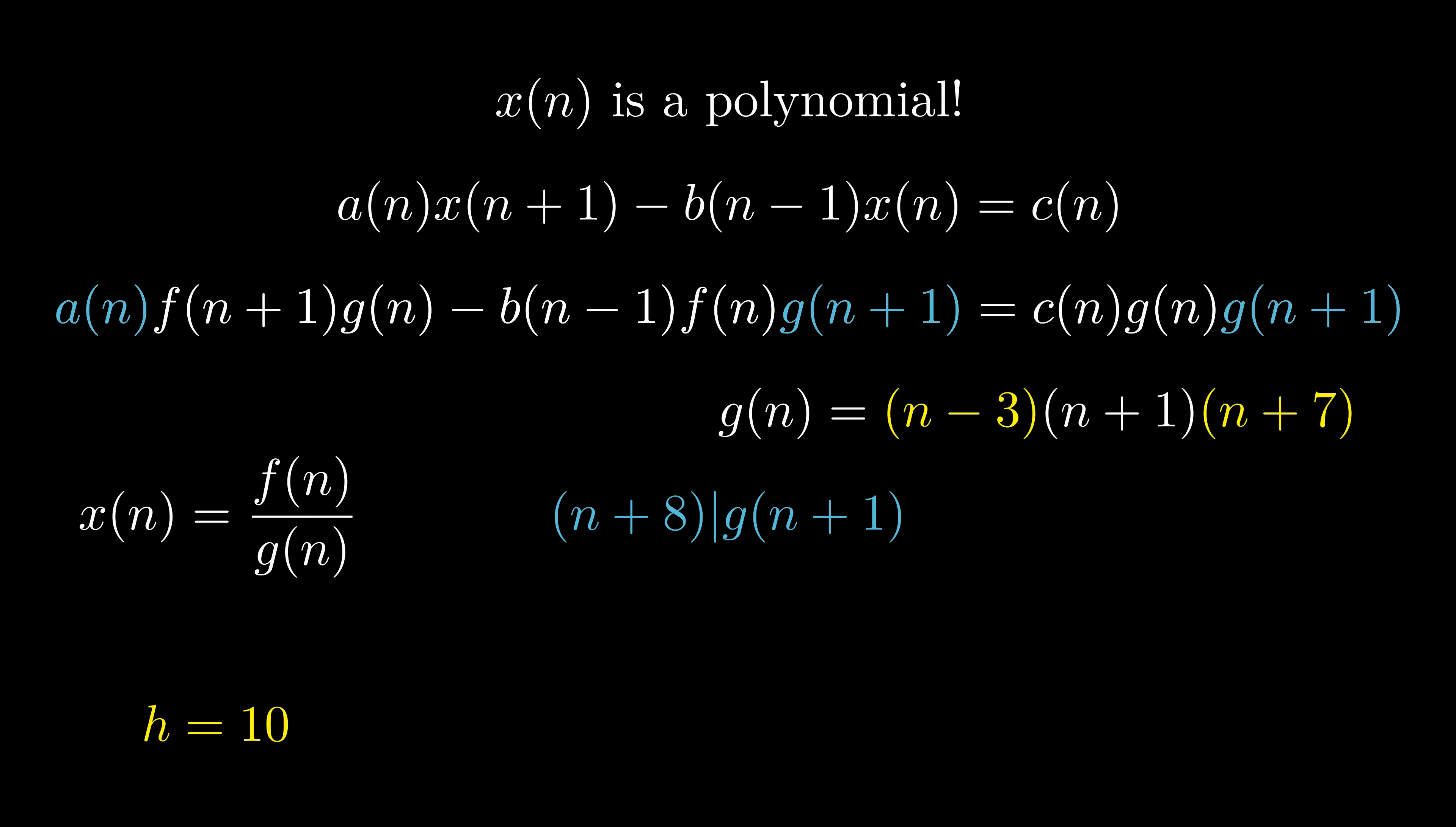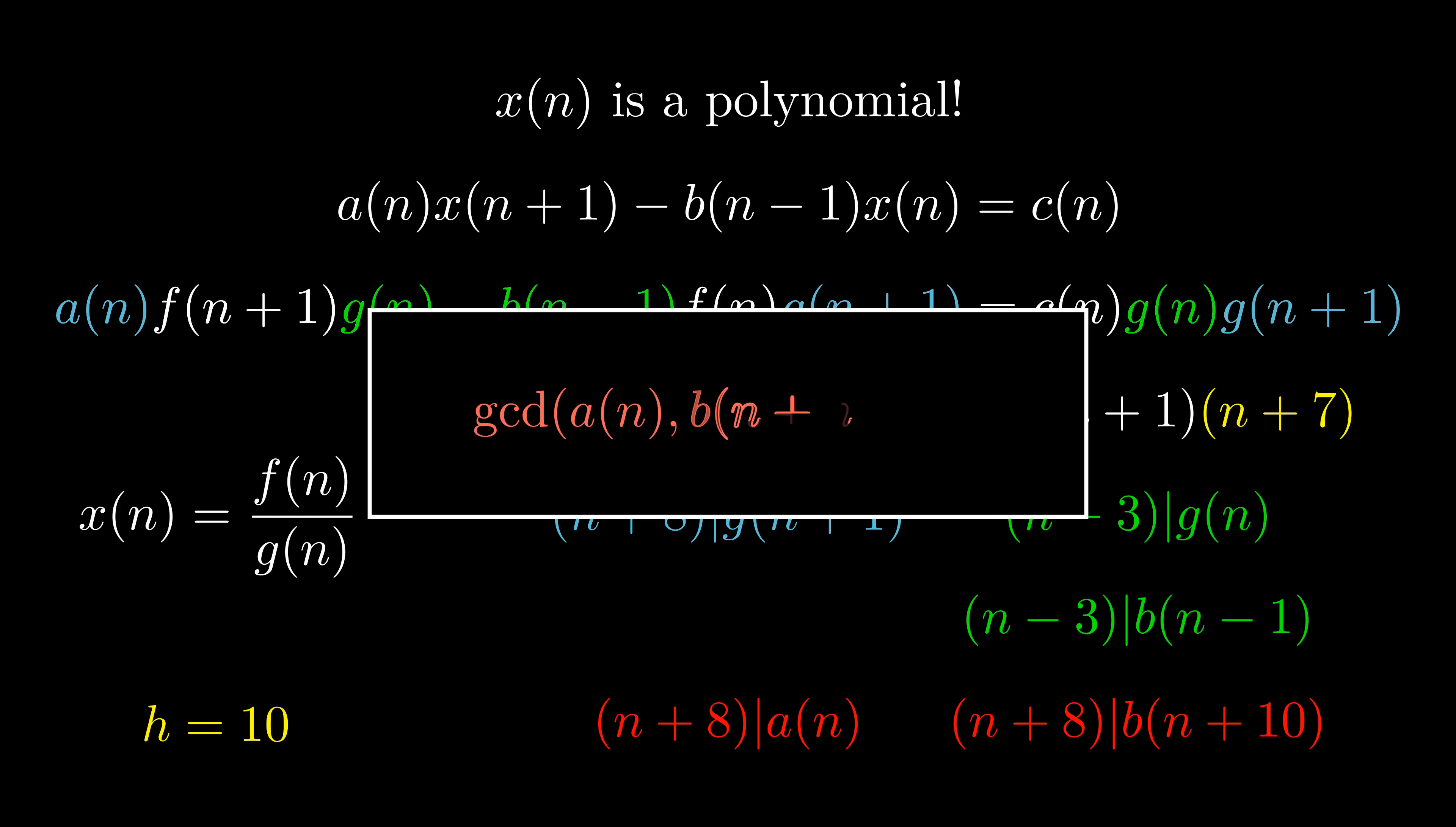Similarly, n minus 3 divides g(n), so it must divide b(n-1), f(n), or g(n+1). It can't divide f(n) by definition, and it can't divide g(n+1) because the coefficient of minus 3 is too low. Therefore, n minus 3 must divide b(n-1). But this means n+8 must divide b(n+10), which is a problem now because a(n) and b(n+h) share a factor, violating our GCD condition from before. This proves that g cannot have factors, and so x must be a polynomial.